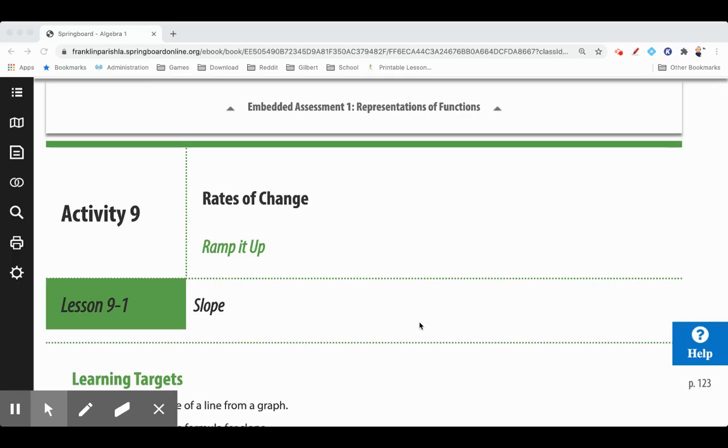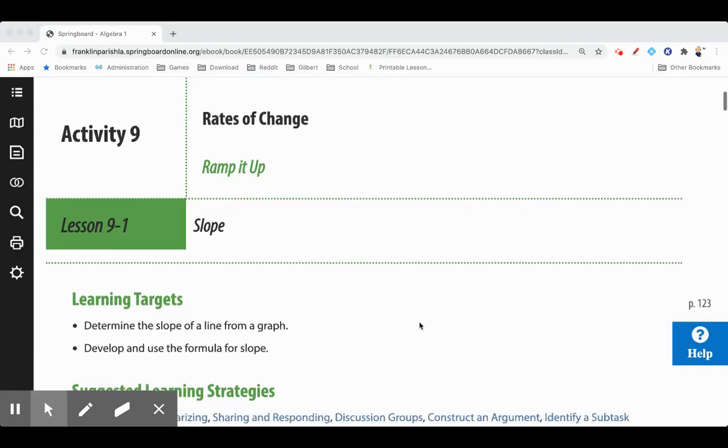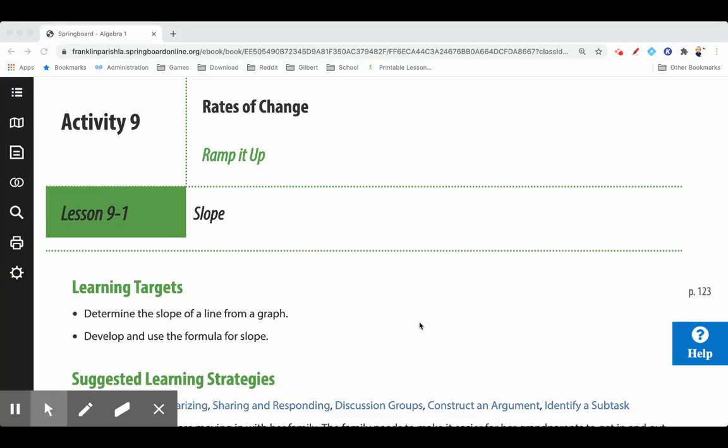Today we're looking at slope and we're going to be able to find the slope from a graph and find the formula for slope from just points.